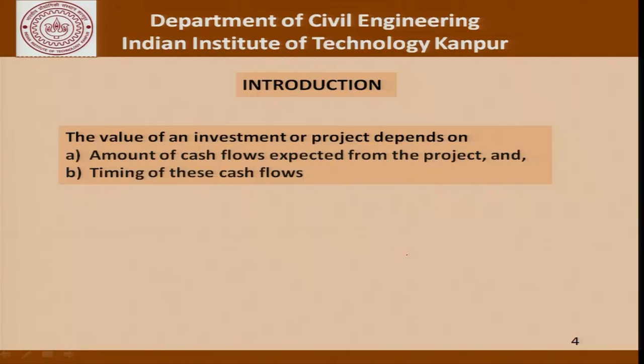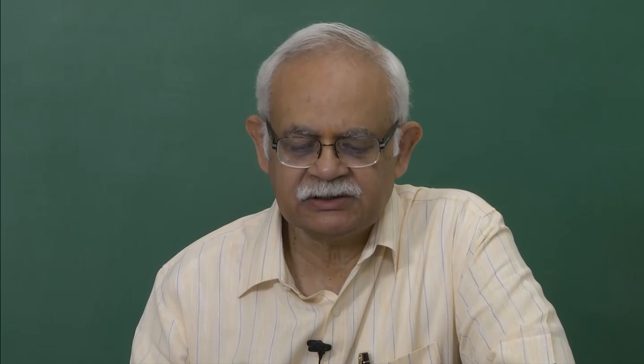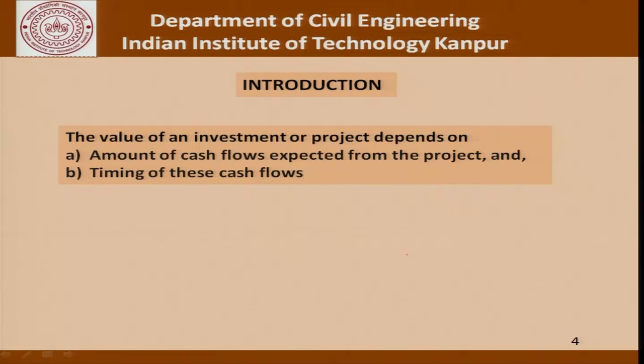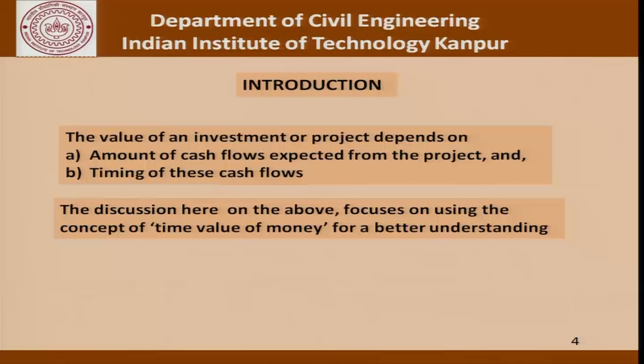The value of an investment or project depends upon the amount of cash flows expected from the project and the timing of these cash flows. For a given project, payment can be made all at once at the end or in installments as the project proceeds. Cash flow from one party differs from the other — when I make a payment it is an expense for me, but a receipt for the other person.